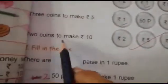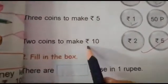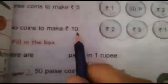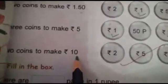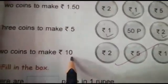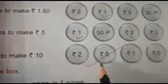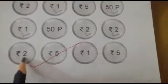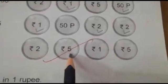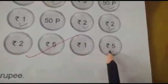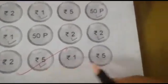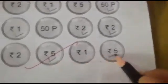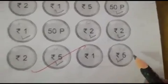2 coins to make rupees 10. There are 4 coins: 2 rupees, 5 rupees, 1 rupee and 5 rupees. Which 2 coins do we need? 5 rupees and 5 rupees are 10 rupees.